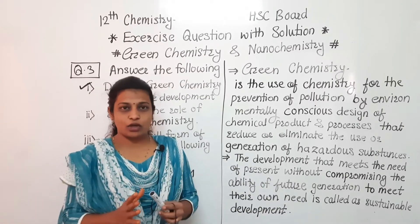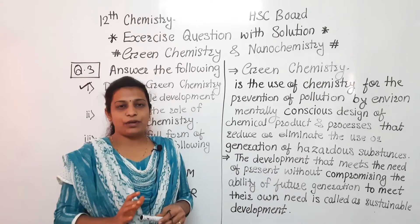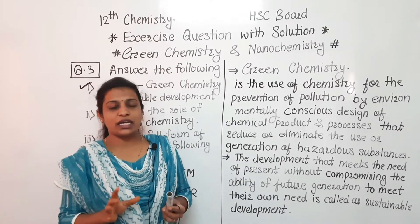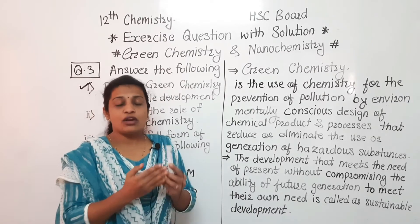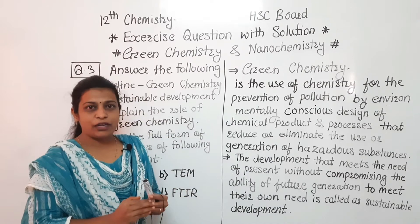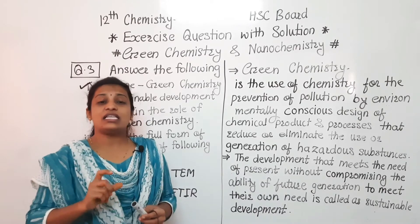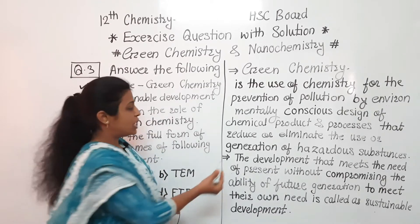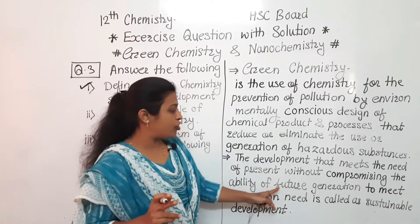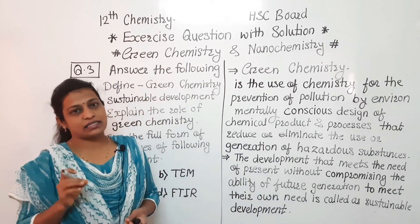The second definition is sustainable development. Consider our generation and the next generation — our needs and their needs both must be fulfilled. The development we do in the present should not compromise future generations. That is nothing but sustainable development: the development that meets the need of the present without compromising the ability of future generations to meet their own needs.